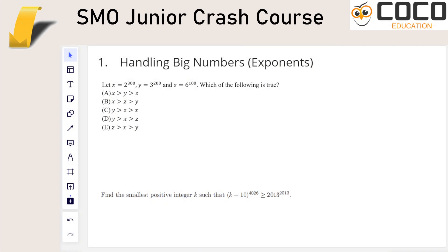One of the things I found very interesting about Olympiads is just all the very big numbers. It felt kind of cool to deal with huge numbers, but the trick is that you don't really deal with the huge numbers directly. When handling huge powers, you normally want to either make the base the same or make the power the same. Here you can see that the powers are 300, 200, and 100 — so all of them are some multiple of 100.